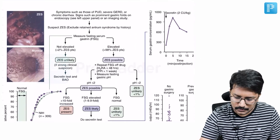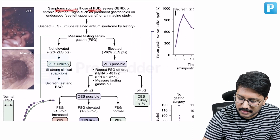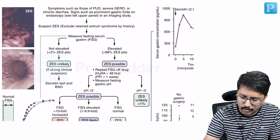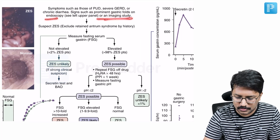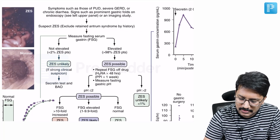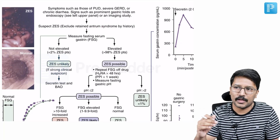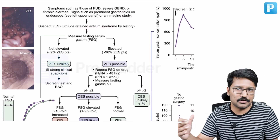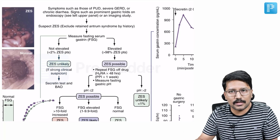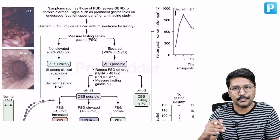This flowchart from Sleisenger and Fordtran clearly shows the approach we just discussed. Symptoms such as peptic ulcer disease, GERD, or chronic diarrhea, and signs such as prominent gastric folds on endoscopy, are all important pointers to suspect Zollinger-Ellison syndrome. Once suspected, it is also mentioned that we should exclude retained antrum syndrome in patients who had previously undergone surgery, where retained antrum may be producing the acid. But most cases haven't had surgery, as surgery is not initially performed for peptic ulcers.